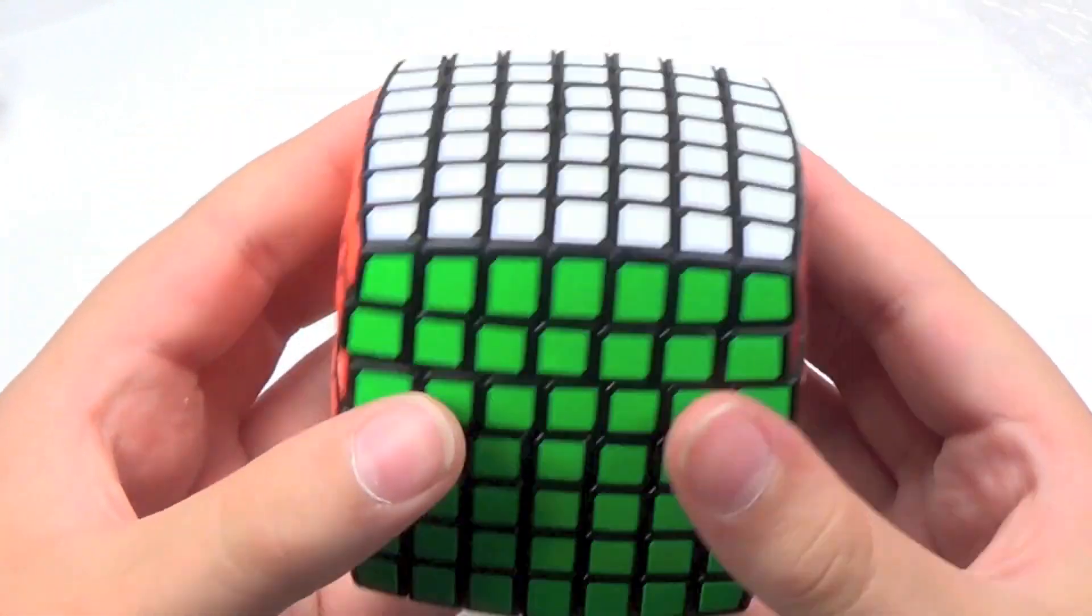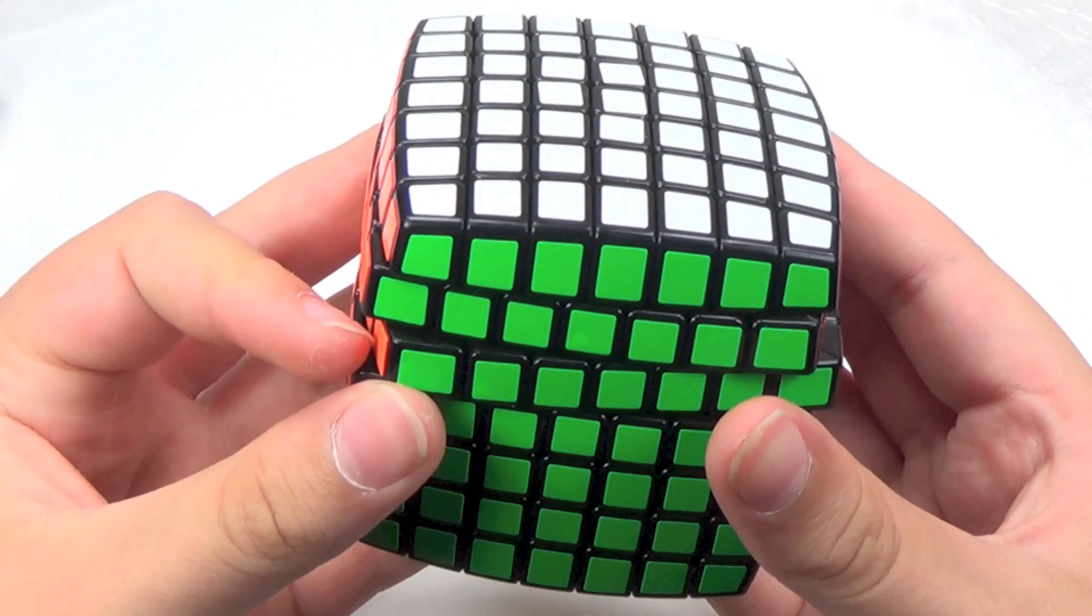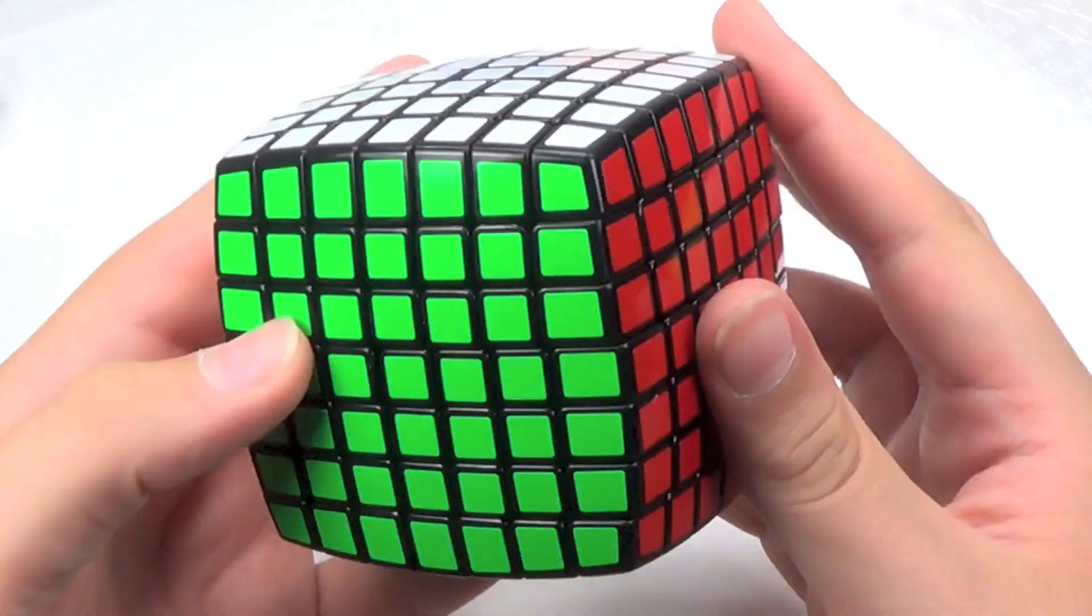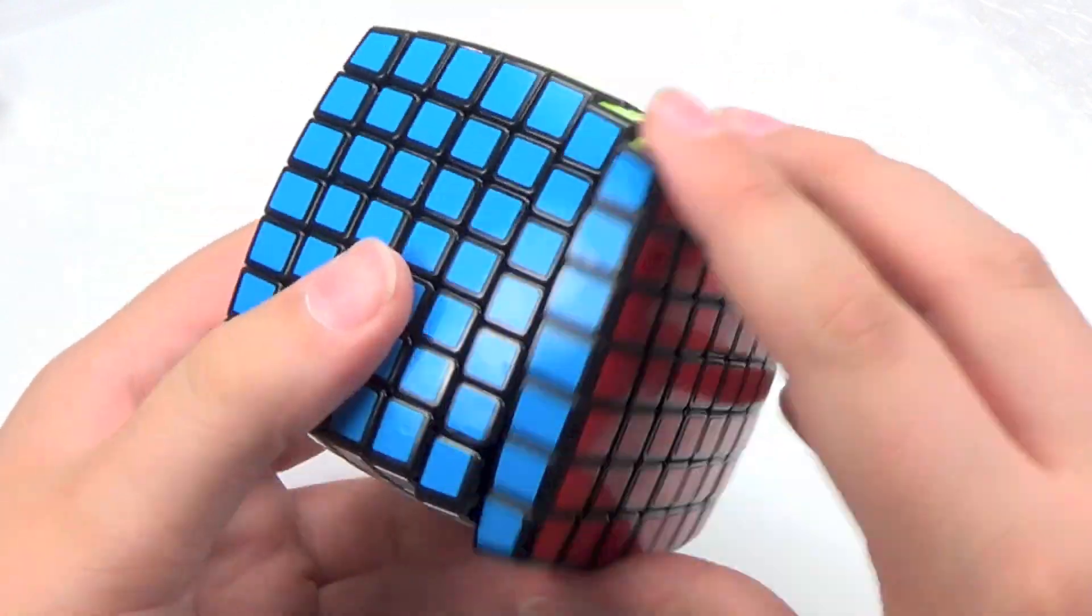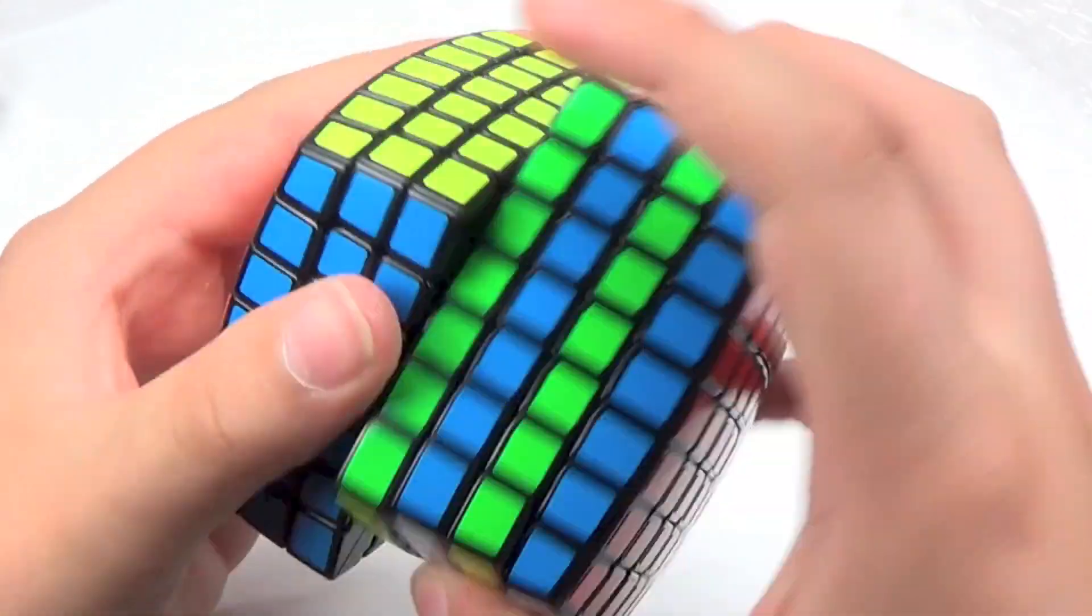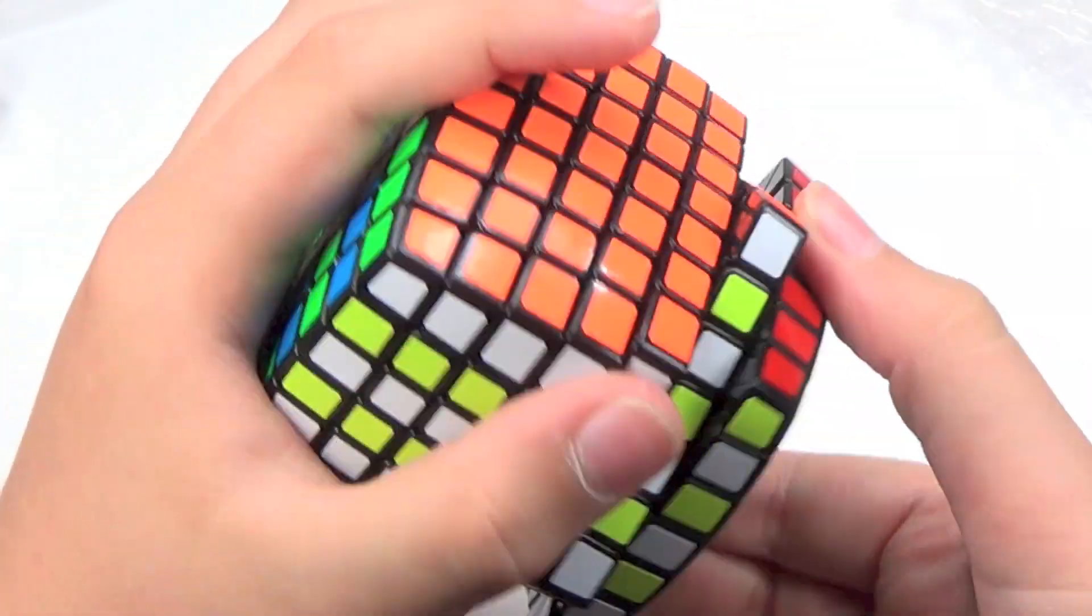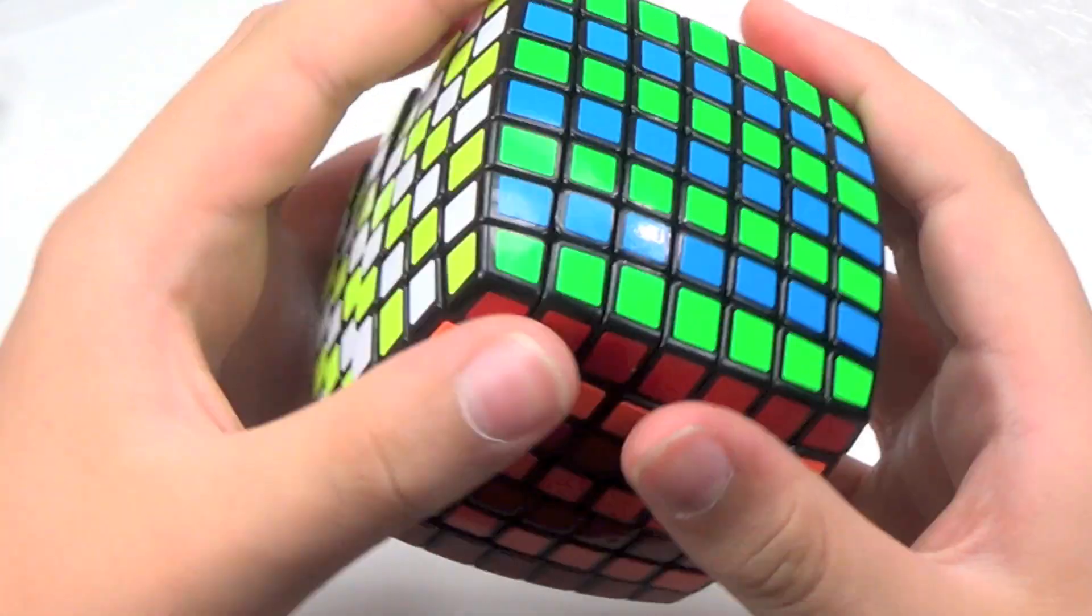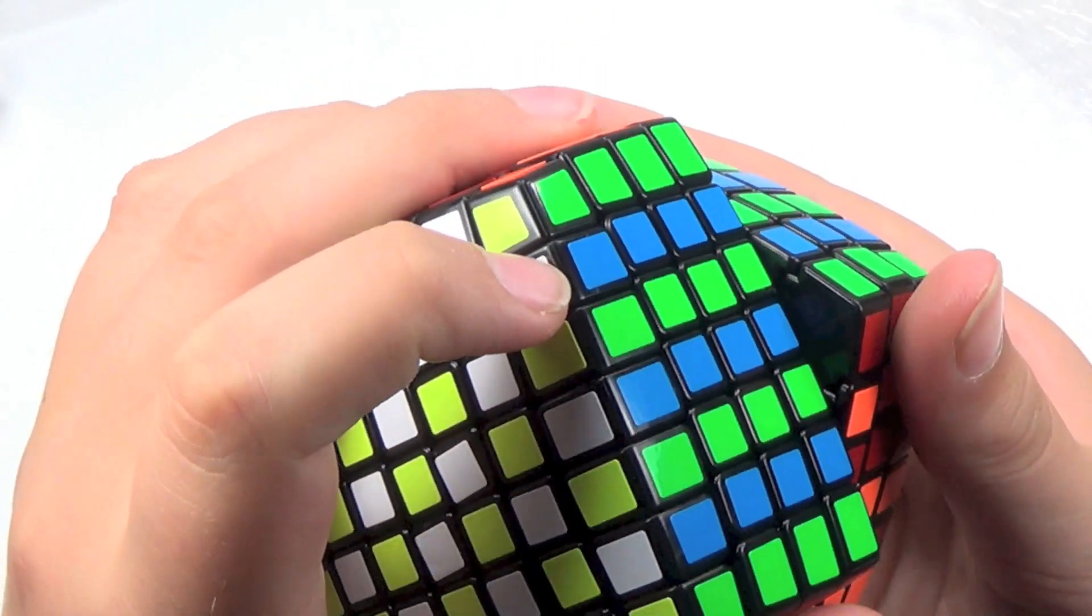You know, out of the box it actually kind of resembles a broken in Osu 4x4. We'll just do a checkerboard just to test all the layers. I can tell it feels like it's been pre-lubricated, definitely.